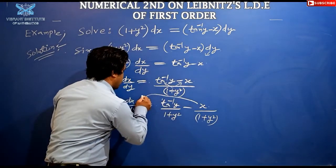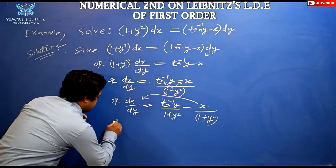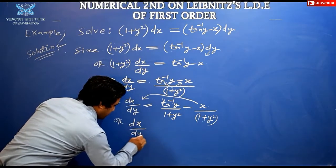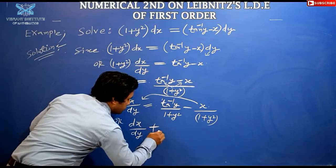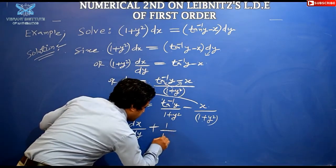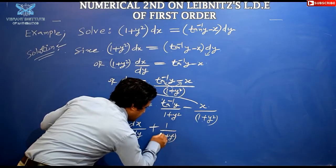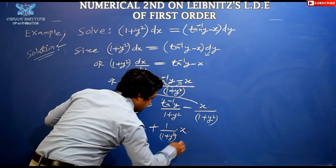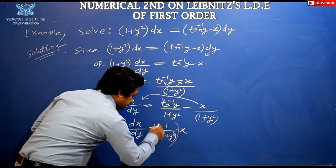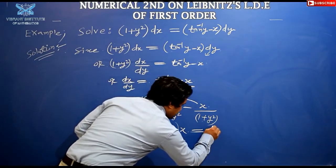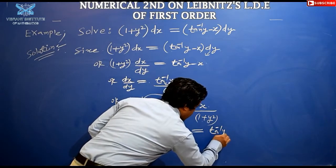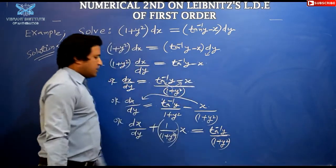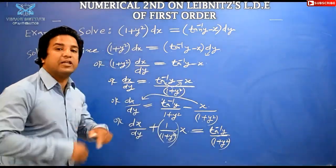Transferring the x-term to the left-hand side (negative becomes positive): dx/dy + x/(1 + y²) = tan⁻¹y / (1 + y²). This is our simplified equation.